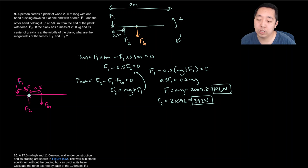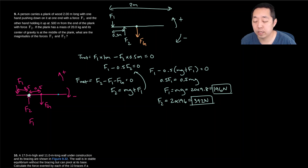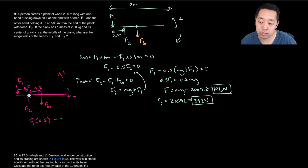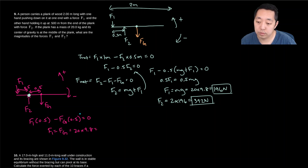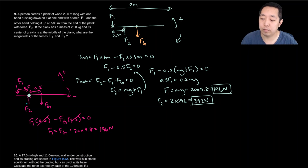With F2's location as the point of rotation, F2 exerts no torque. F1 causes counterclockwise rotation with torque +F1 × 0.5, and gravity acts at the center — 0.5 meters from this point — causing clockwise rotation: −Fg × 0.5. Setting net torque to zero, the 0.5s cancel and F1 = Fg = 196 N. Similarly, picking F1's location as the pivot: F2 × 0.5 − Fg × 1 = 0, giving F2 = 2Fg = 392 N.